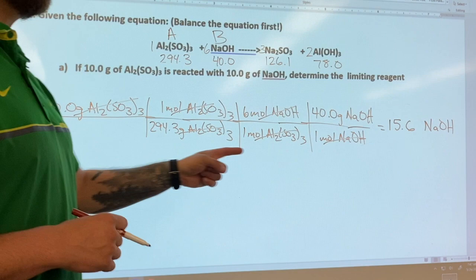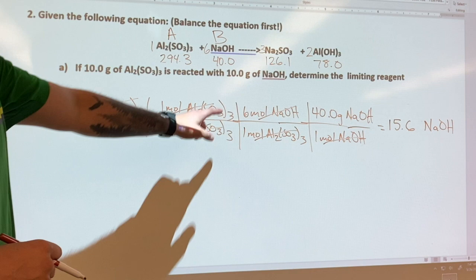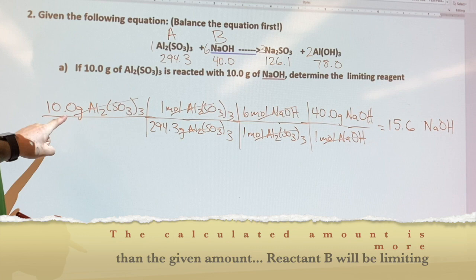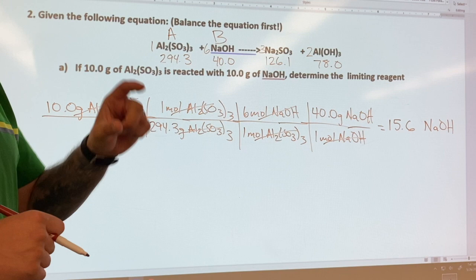That means in order to use up all of this stuff right here, I would have needed that much NaOH and I don't have that much. So that means I'm not going to be able to use up all of this because that NaOH over there is going to limit me. And I'm going to put a little tag at the bottom, but essentially when you calculate, if the number over here is less than the given, then this thing that we started with is going to be limiting.